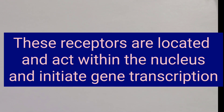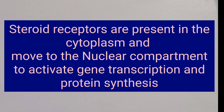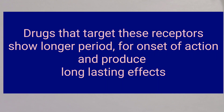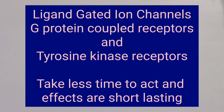This category of nuclear receptors is present within the nucleus and initiates gene transcription and protein synthesis, unlike the steroid receptors which are present in the cytoplasm and translocate into the nucleus after forming dimers. Gene transcription is a relatively slow and long-lasting process. Therefore, drugs that target these receptors often require a longer period for onset of action and the effects are long-lasting, compared to drugs that act on ion channels, G-protein coupled receptors and tyrosine kinase receptors.